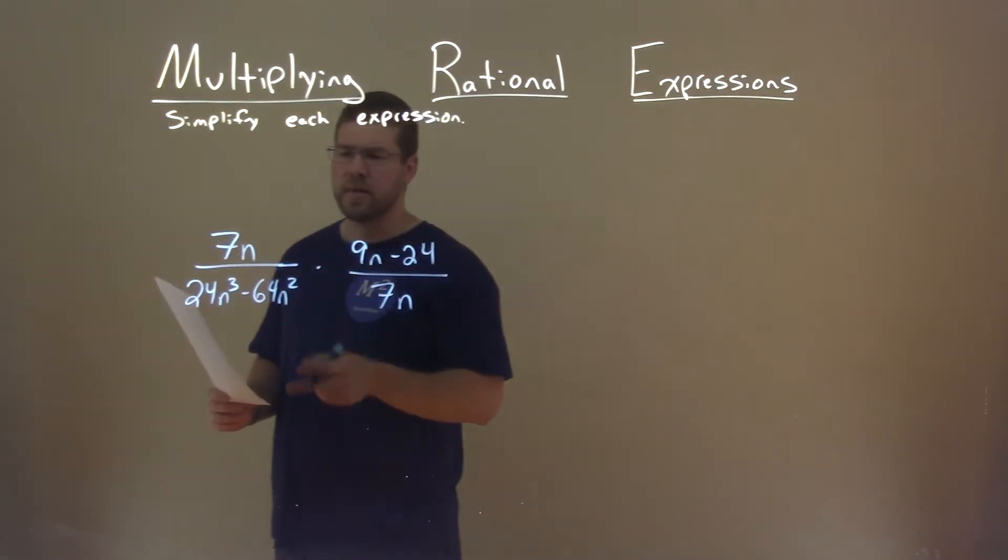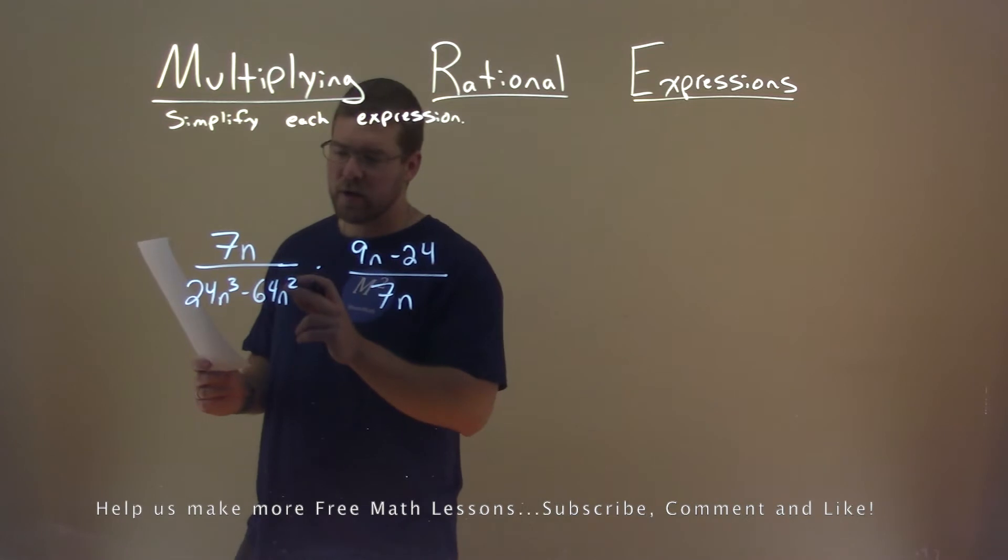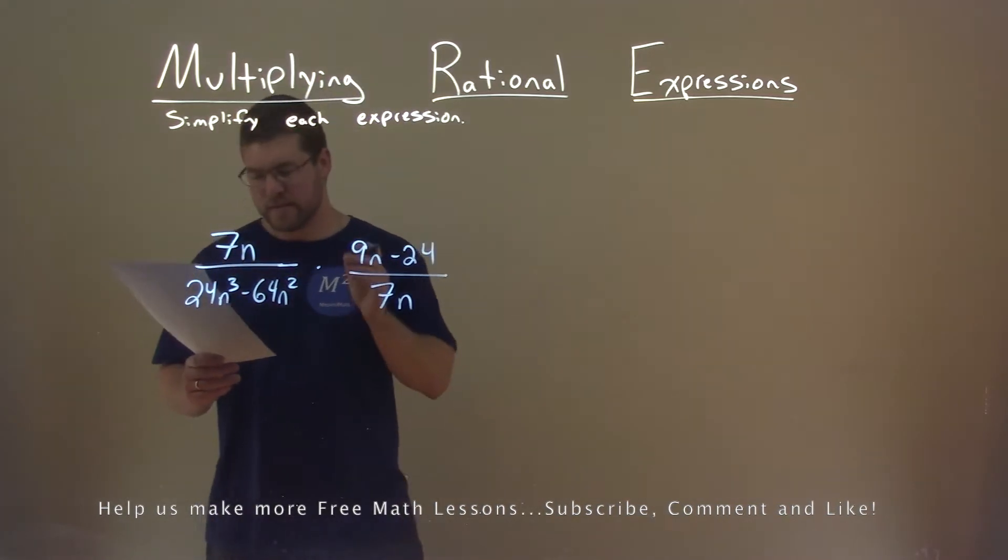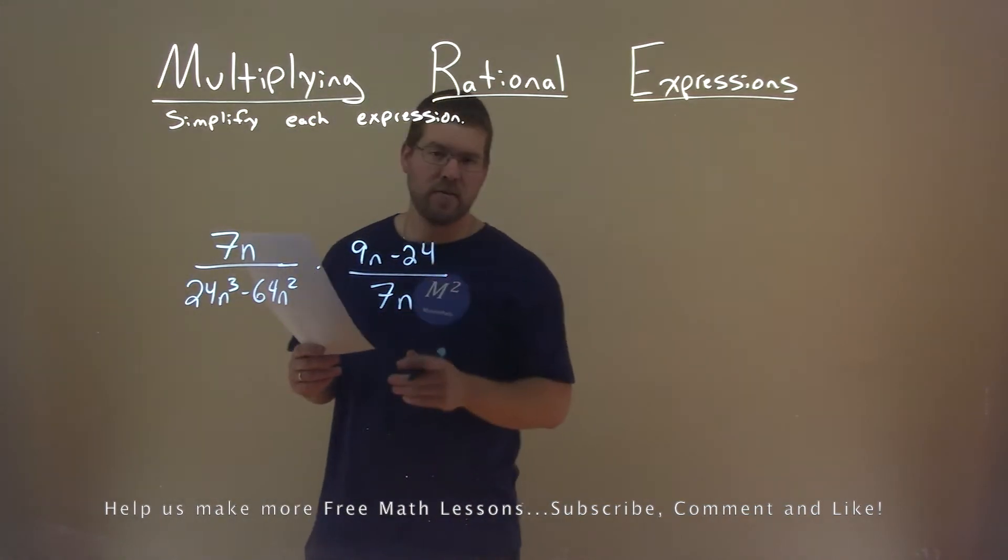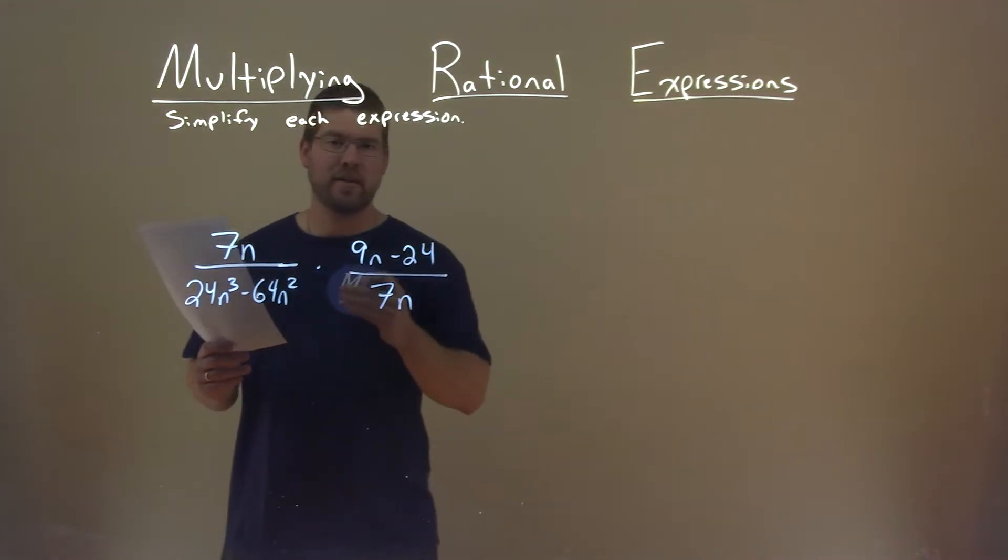We're given this expression right here, 7n divided by 24n to the third power minus 64n squared, times 9n minus 24 divided by 7n, and we want to simplify this expression.